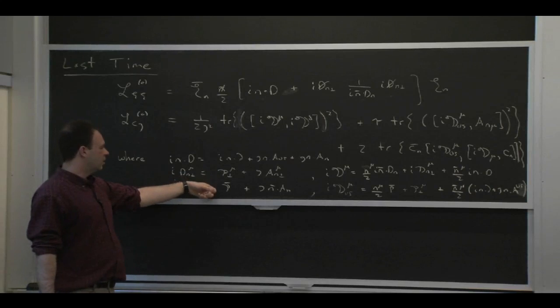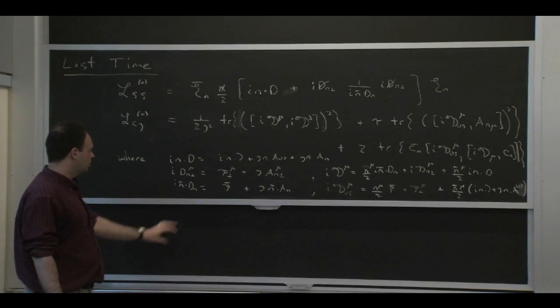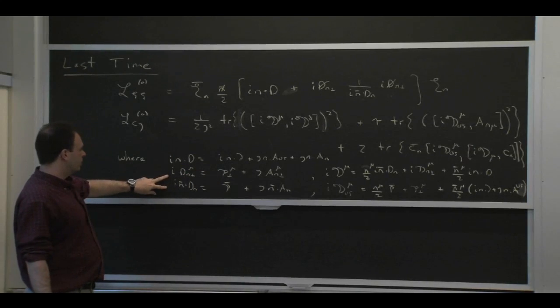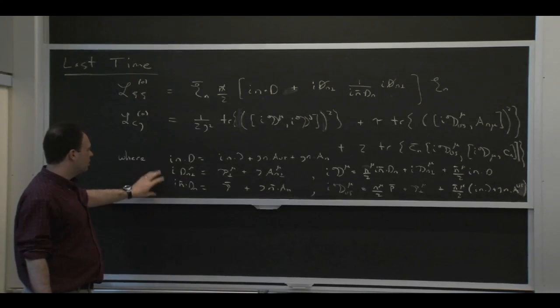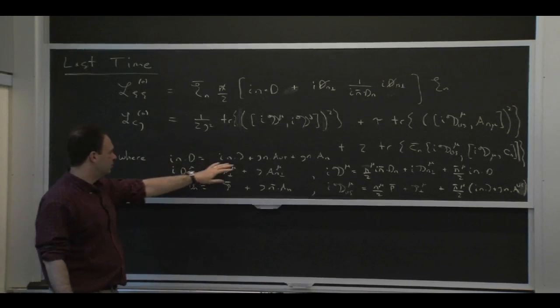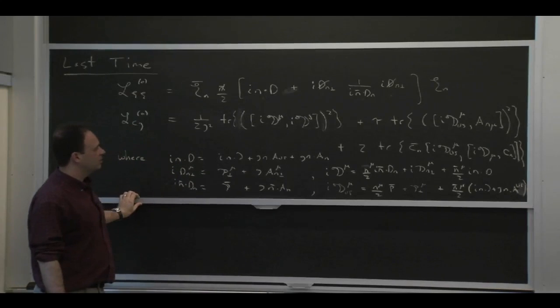We had these labels and this label operator that picked out the collinear momenta. So we could define collinear covariant derivatives with this subscript n, whereas this d is like a full derivative that involves both types of gauge field.